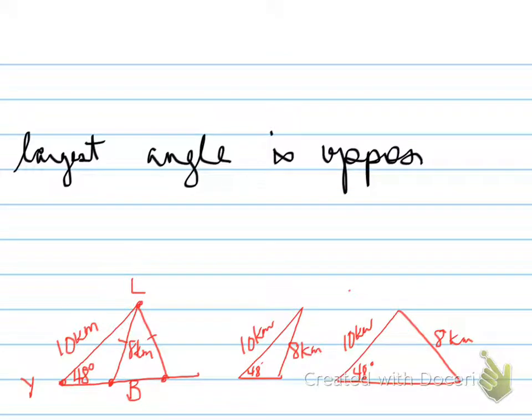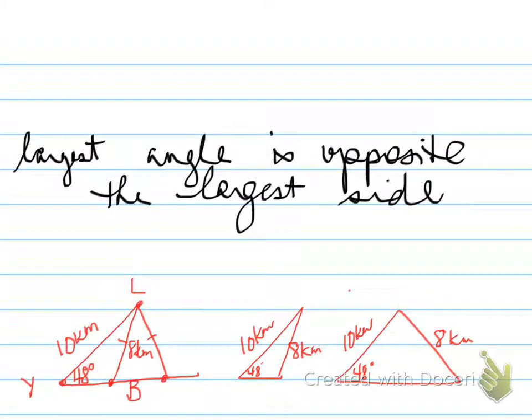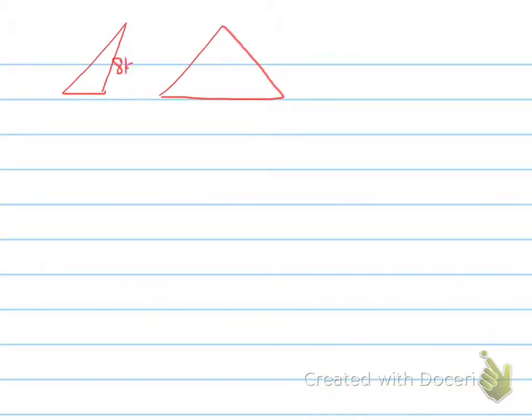A couple of other things to remember. The largest angle is opposite the largest side at all times, folks. And we could change the word largest to smallest, and we would get the same value. The smallest angle is opposite the smallest side. Alright, let's move forwards. Here are your two triangles.